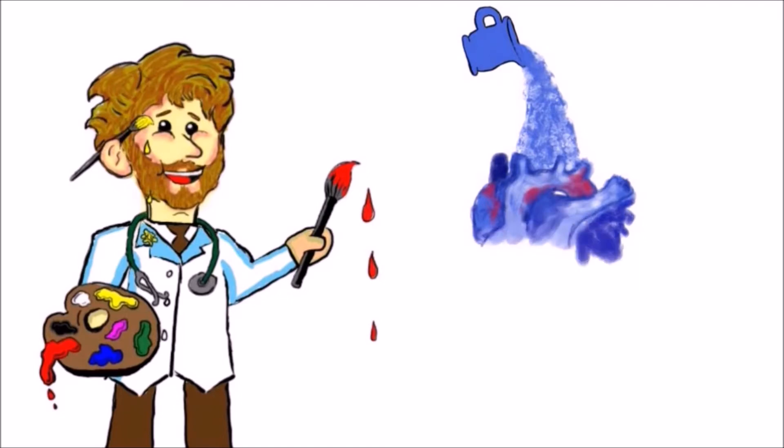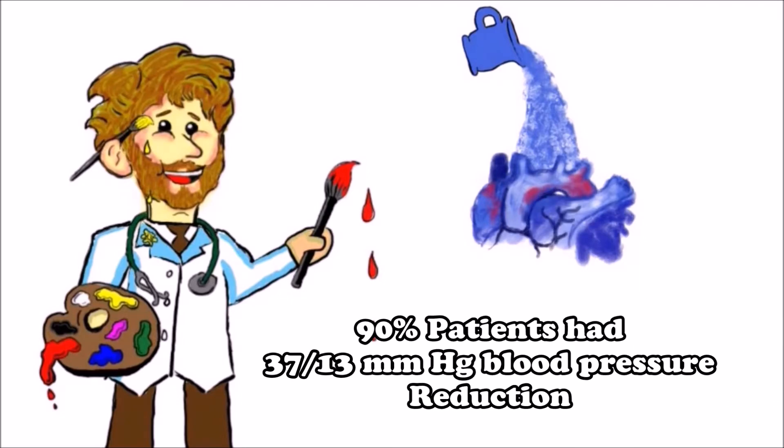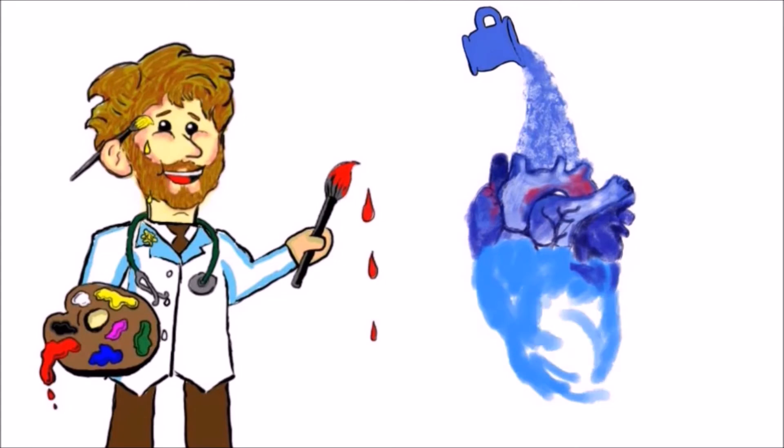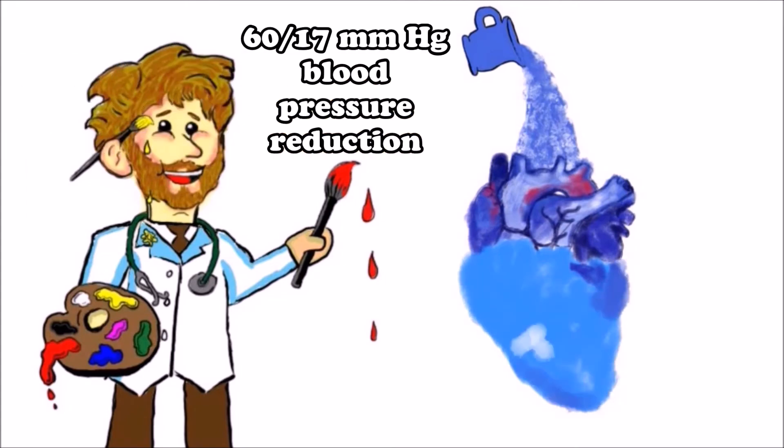The results showed almost 90% of the patients had reduction in blood pressure by 30 points systolically and 13 points diastolically. And in stage three hypertension cases, they had blood pressure reduction on average of 60 points systolically and 17 points diastolically.